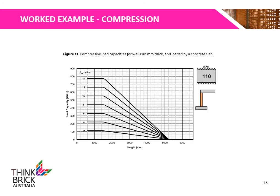Here we have a design chart that determines the compressive load capacities for walls that are 110 mm thick loaded by a concrete slab. This chart uses the compressive strength of the masonry and wall height to determine the compressive load capacity of the wall.